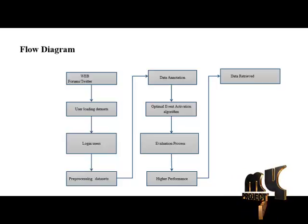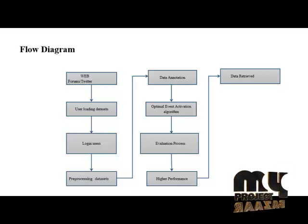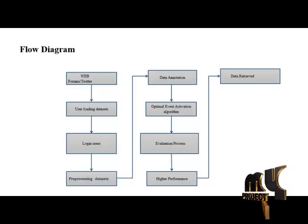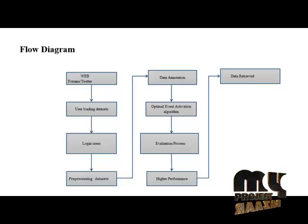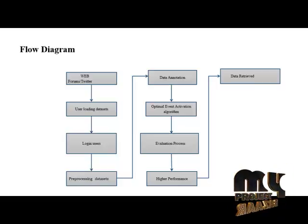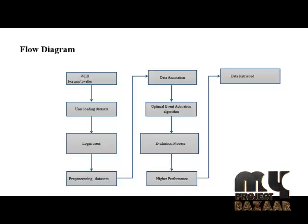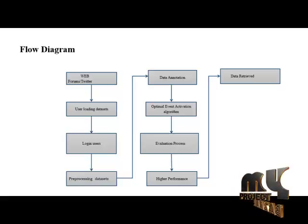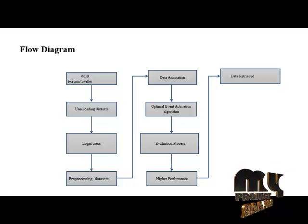In the flow diagram, first of all, web forums like Facebook and Twitter and other social networks are used as input. Users load the datasets by logging in. The users can also detect and load the datasets and process them immediately. Pre-processing of datasets is also included.